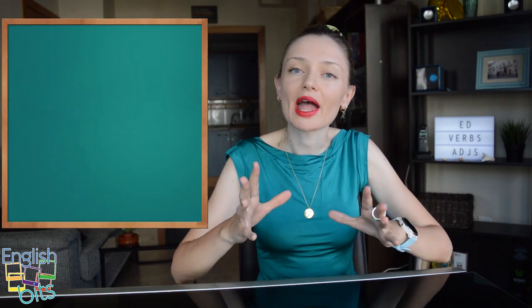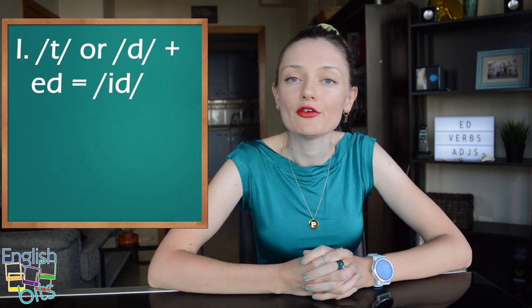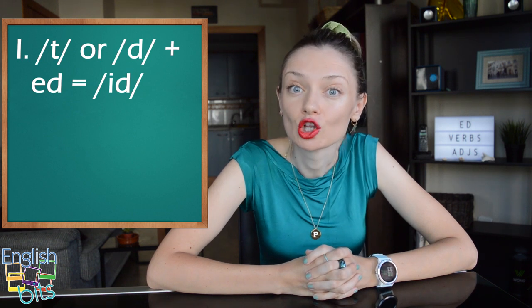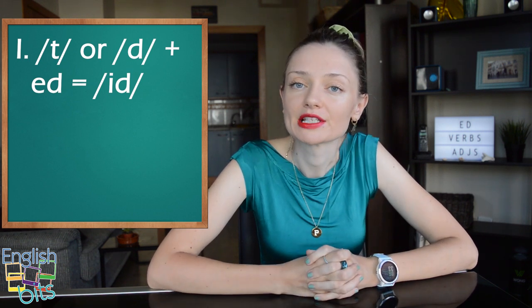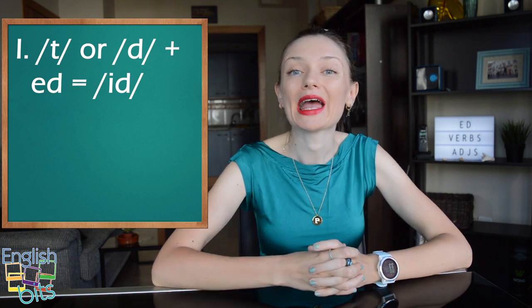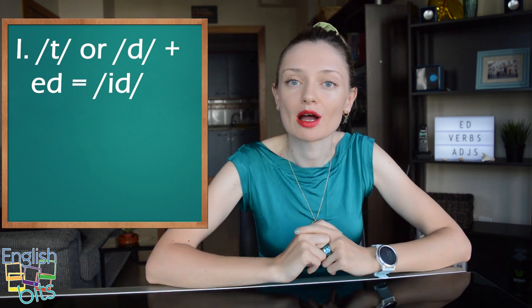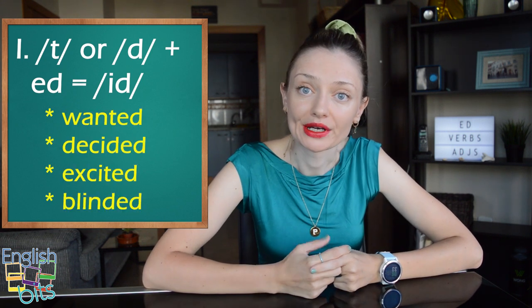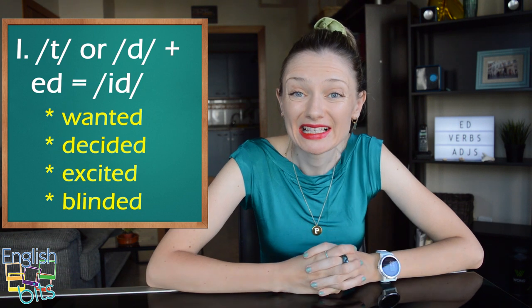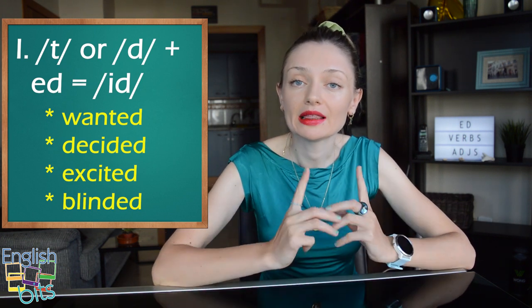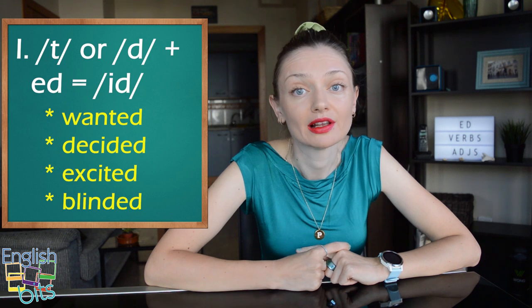The rules we're going to look at apply both to adjectives ending in ED and regular verbs in the past. Basically, there are three groups. Let's look at the first group. If the pronunciation of the final sound — not letter — of the infinitive is T or D, and we add ED, the pronunciation is ED. For example: wanted, decided, or some adjectives: excited or blinded. So only in this case, we pronounce the letter E.